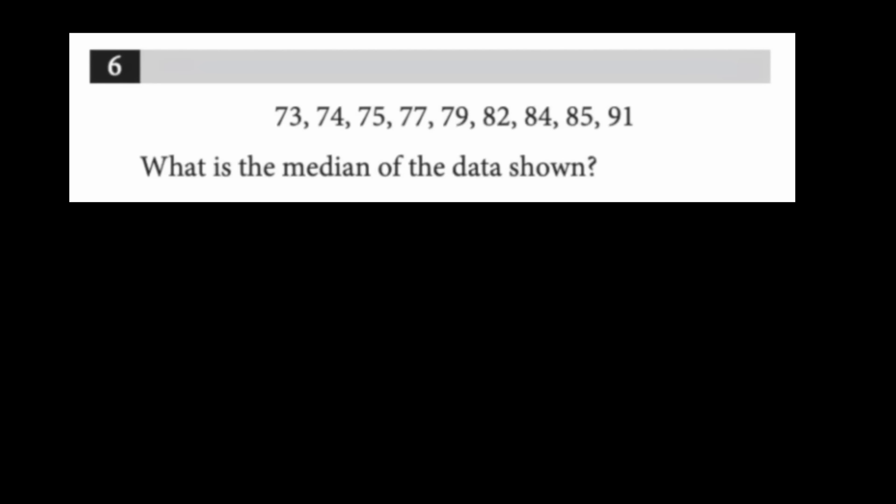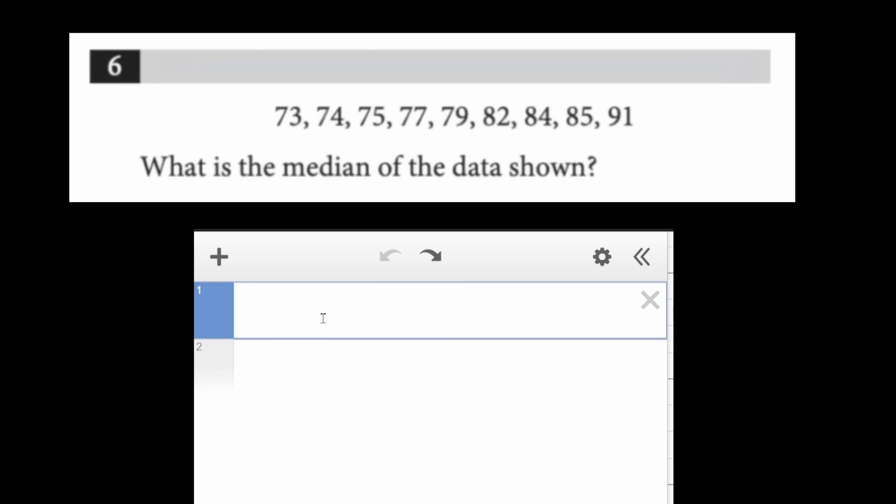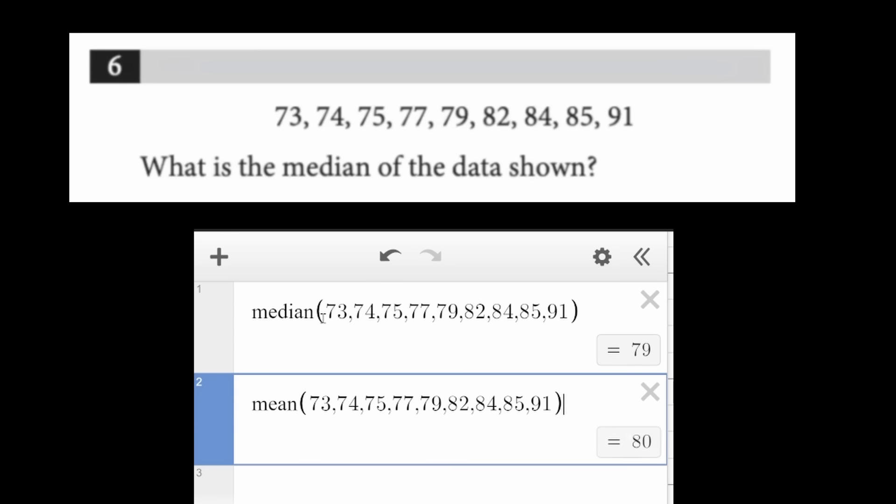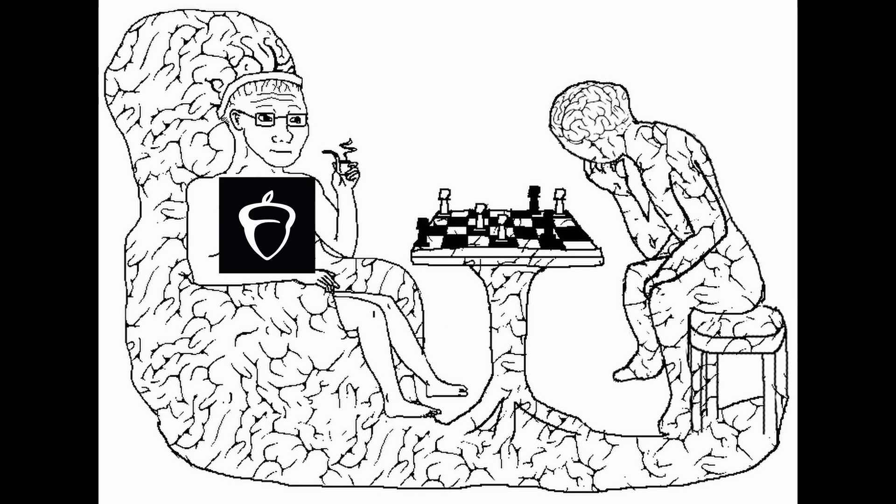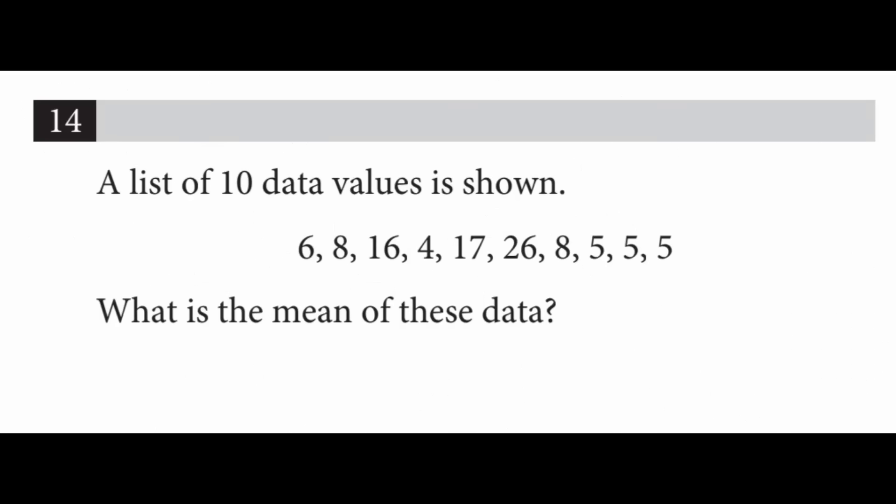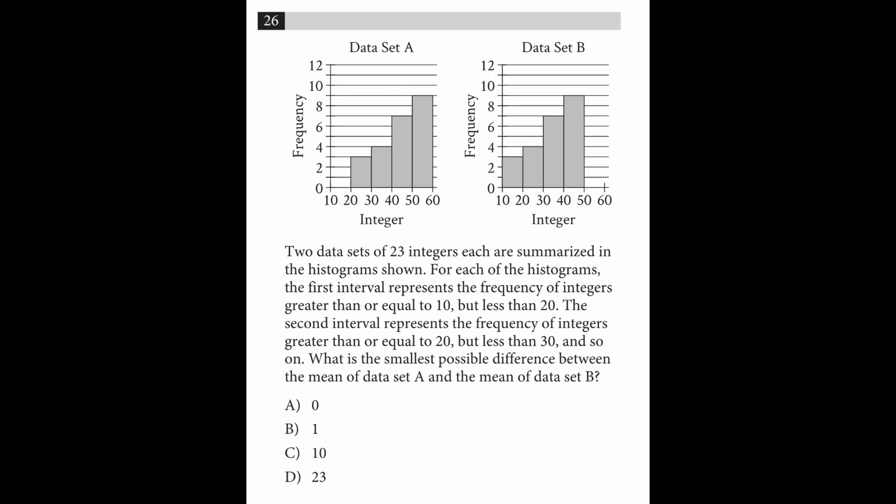This one's just funny to me. You can literally type median followed by your dataset in parentheses and Desmos will give you your median. It's the same thing with mean. It's as simple as that. The thing is, College Board knows this, so for every stupid easy mean and median problem, they'll give you one of the hardest problems on the entire test. So if you're trying to get a 700 or higher, you still need a strong understanding of mean and median, but for the rest of you, you kind of just plug it in.